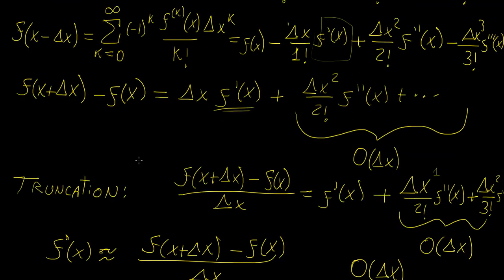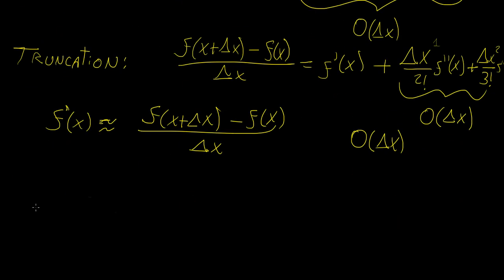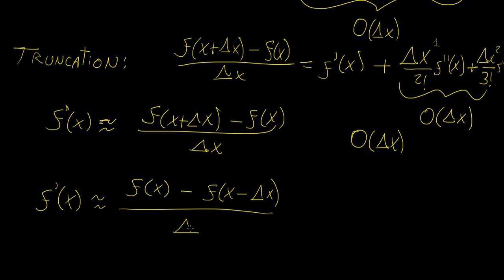We can do the same thing for the backward difference. You take the Taylor expansion for f(x - Δx), subtract f(x), and solve for f prime of x. The backward difference approximation is f(x) minus f(x - Δx) over delta x. The truncation error is exactly the same as for the forward difference — order of delta x — so there's really no advantage to using one over the other.